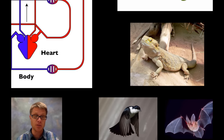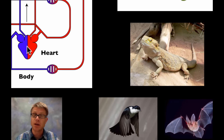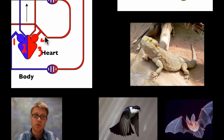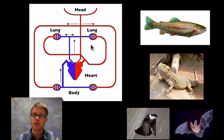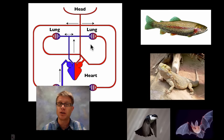So in birds and mammals we have a four-chambered heart. Basically what we've done is sealed up that third chamber — now we have one, two, three, four chambers. We still have a double loop, which is more efficient. These have evolved as we've had different constraints depending on the environment where they live.